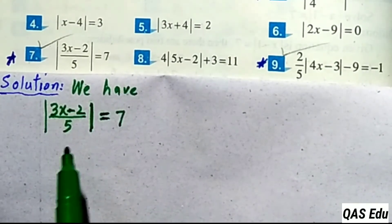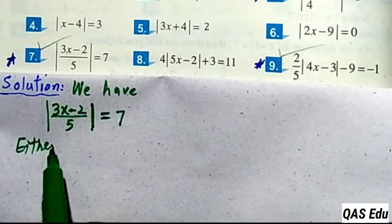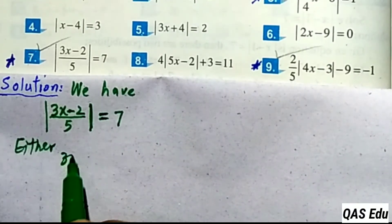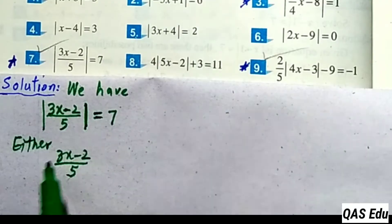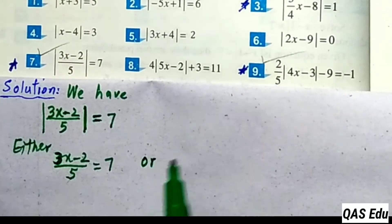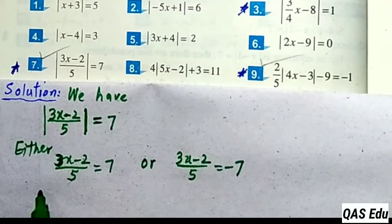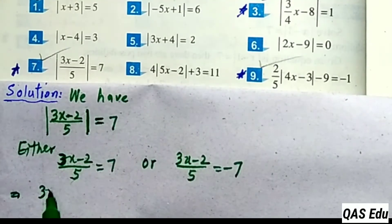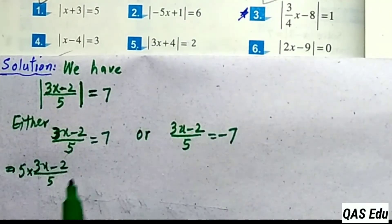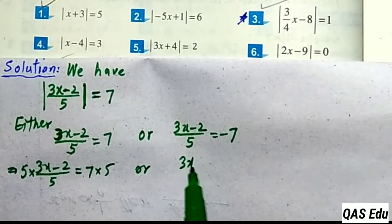Question 7: we have the equation. Two possibilities: either this equals plus 7 or this equals minus 7. So 3x minus 2 divided by 5 is equal to 7, or 3x minus 2 divided by 5 is equal to minus 7. To eliminate the denominator, multiply both sides by 5.